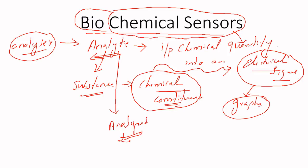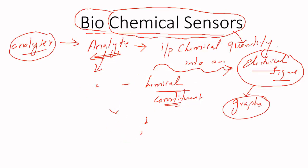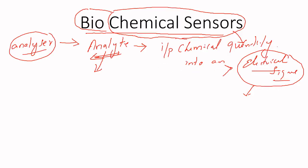Depending upon the chemical quantity or depending upon the nature of the chemical, we will be converting that into an electrical signal and recording it in graphs. Now let me pictorially represent it so that you can understand it more clearly.